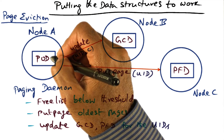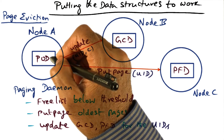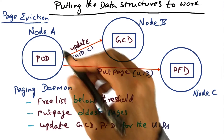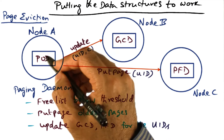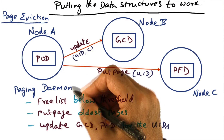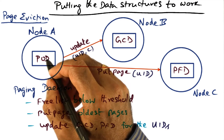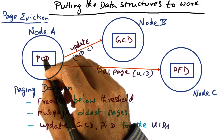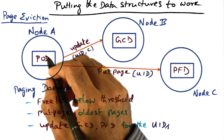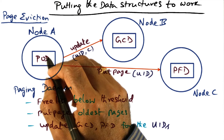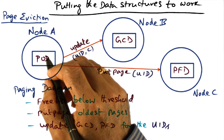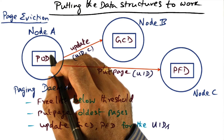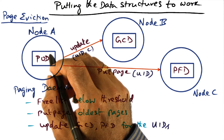However, we don't want to do it on every page fault, but we want to do it in an aggregated manner. For that reason, every node has a paging daemon. This is typical of virtual memory systems — when a page fault happens, that's not the time the virtual memory manager is running around trying to find a free page frame. It always has a stash of free page frames to allocate to service a particular page fault.